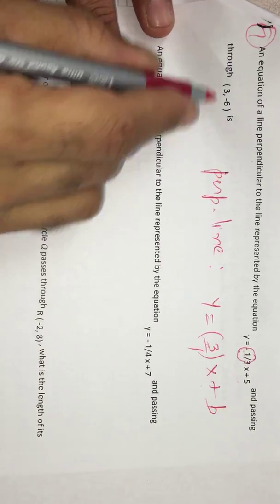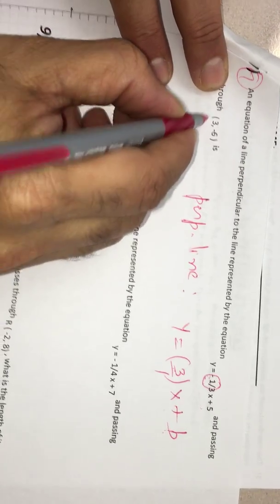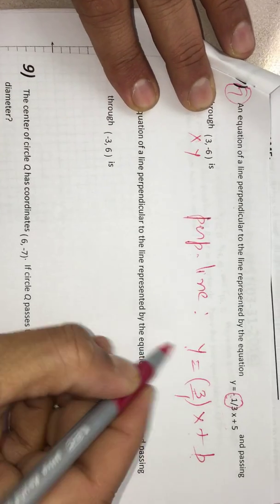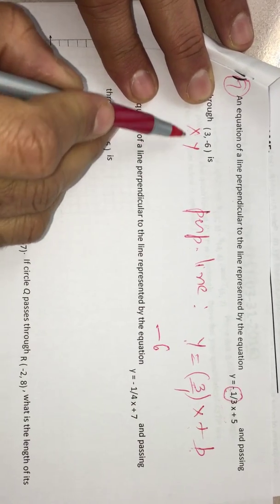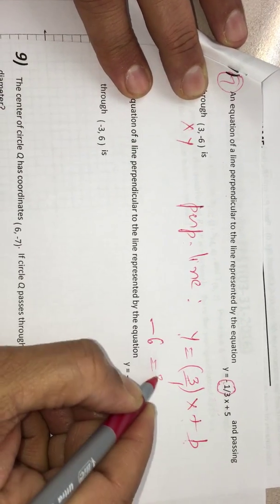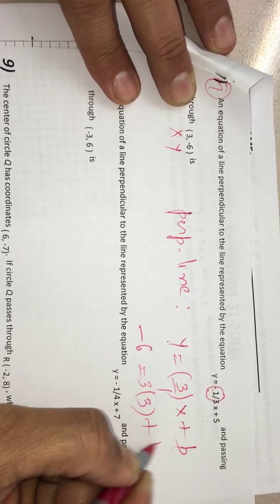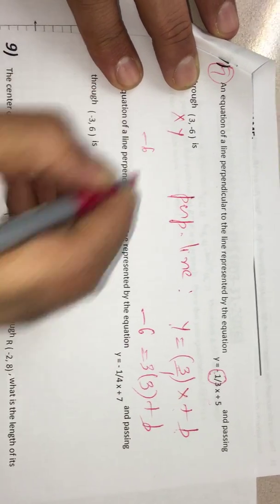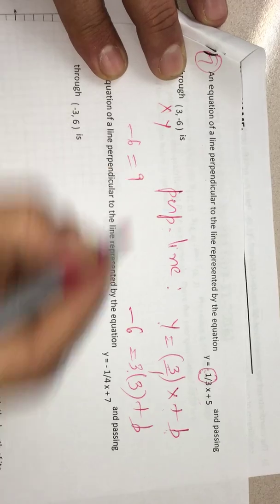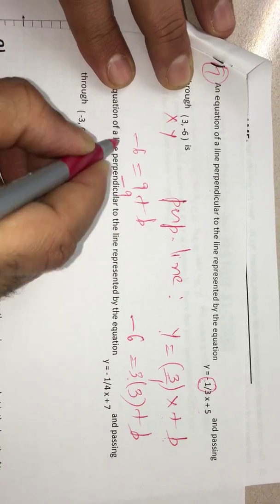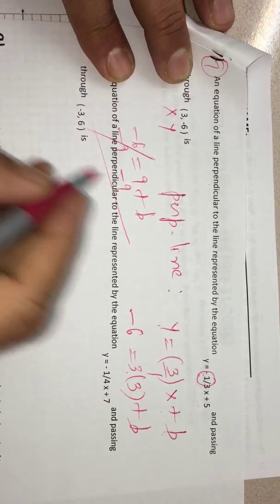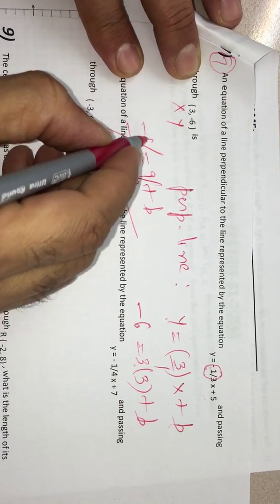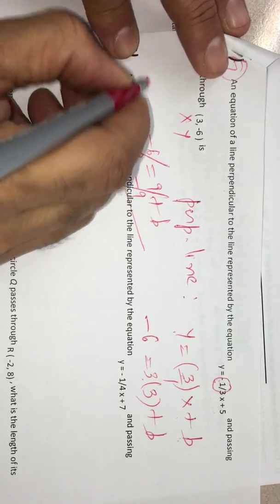For this equation, to find the B value, we have to substitute this point. X is 3, Y is negative 6. For Y, I substitute negative 6 and for X, I am putting 3. What happens now? Negative 6 is equal to 3 times 3 is 9 plus B. Subtract 9 both sides. 9 and 9 cancel. This negative 6 and negative 9 is negative 15. That is B value.